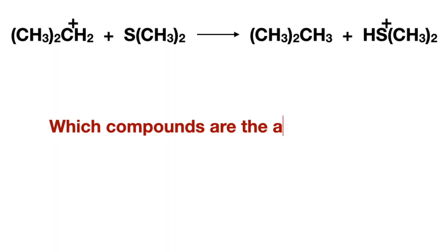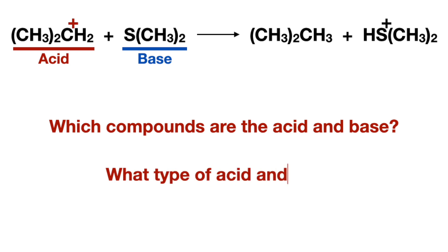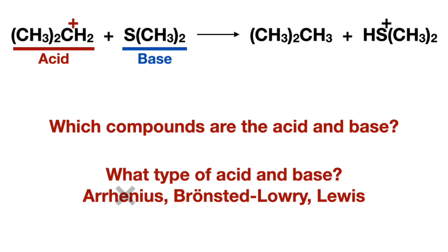Let's try one more example. Which compounds are the acid and the base? The compound on the left has a positive charge, making it the acid, and the compound on the right is the base. What type of acid and base? The acid is not a proton donor, so it's not Arrhenius or Bronsted-Lowry, making it a Lewis acid, with the base being a Lewis base with a lone pair.